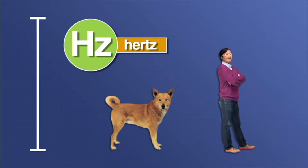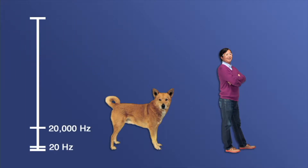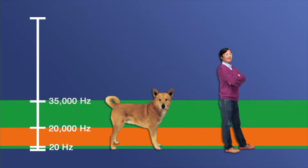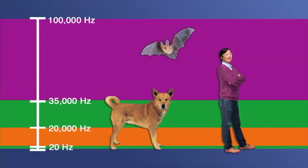A flute, for instance, has a higher frequency and higher pitch than, say, a tuba, which has lower frequency and thus a lower pitch. Did you know that dogs can hear sounds with much higher frequencies than humans? Humans hear frequencies that range between 20 and 20,000 hertz. And dogs can hear sounds with frequencies up to 35,000 hertz. And if you think that's a lot, imagine how amazing bats must be. Some bat species can hear sounds with frequencies up to 100,000 hertz.